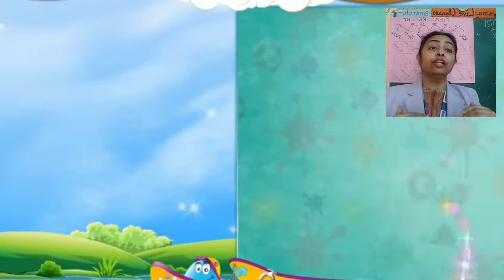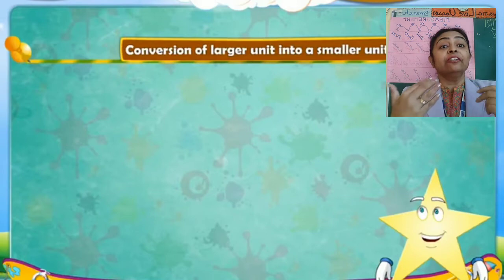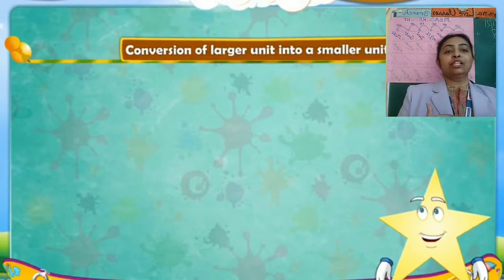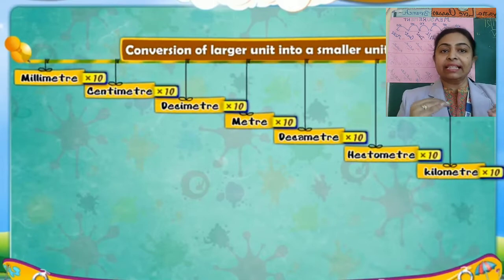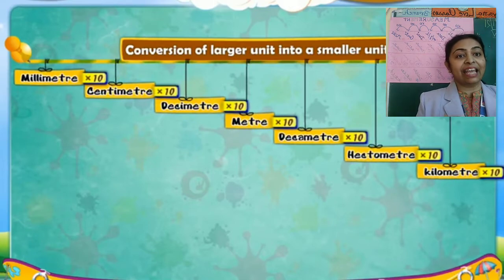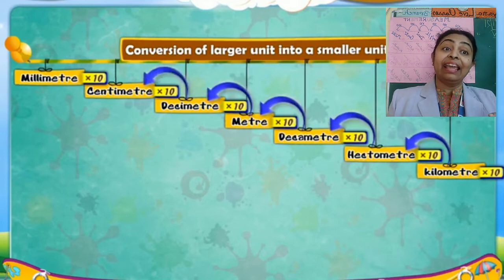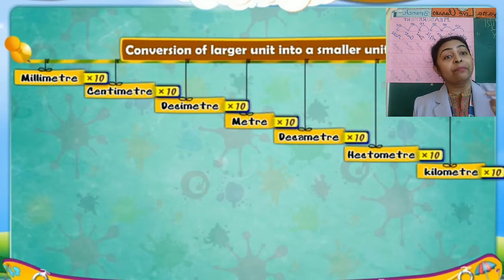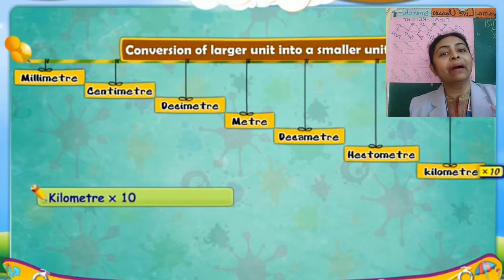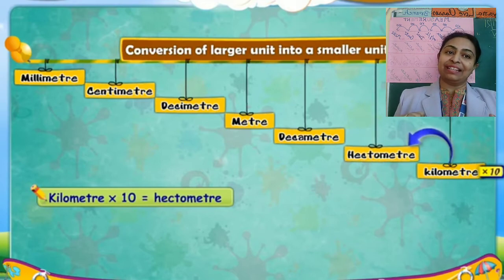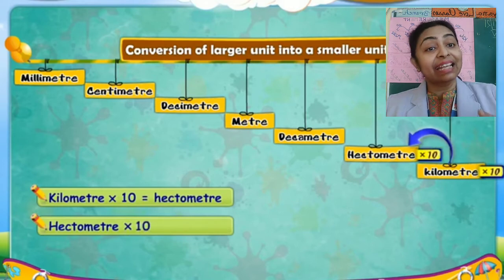Now we will know how we will do the conversion from larger unit to smaller unit. Again we will write the units: millimeter, centimeter, decimeter, meter, decameter, hectometer, kilometer. Now we will multiply. If you multiply one by one from big to small — suppose kilometer multiplied by 10, you will get hectometer. Hectometer multiplied by 10, you will get decameter.